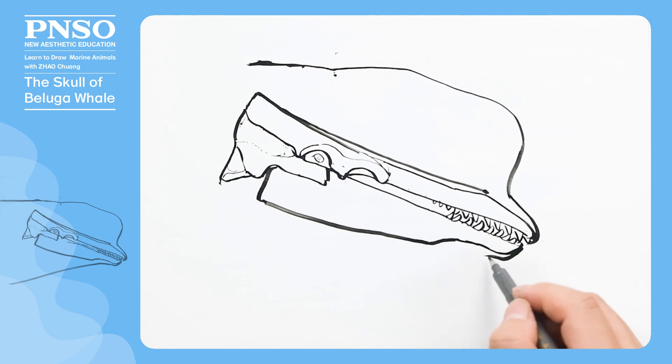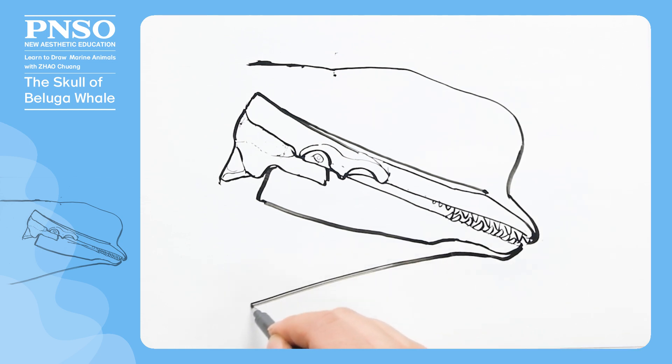A thick layer of fat wraps the lower part of its lower jaw, making it look very stout.